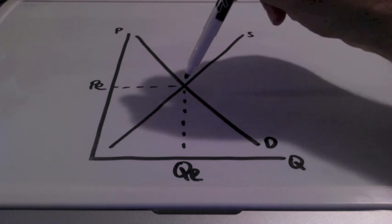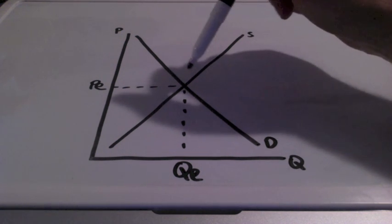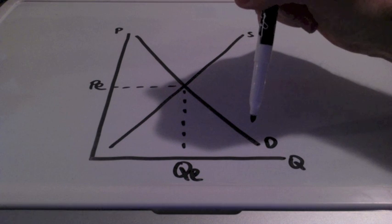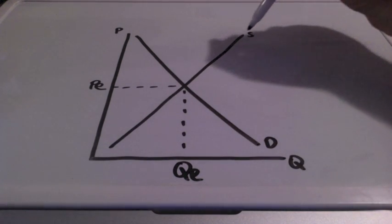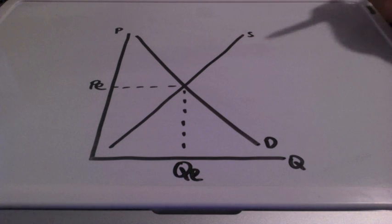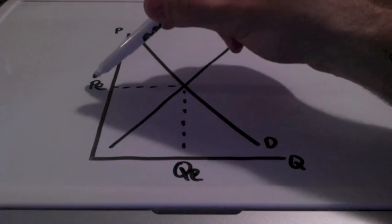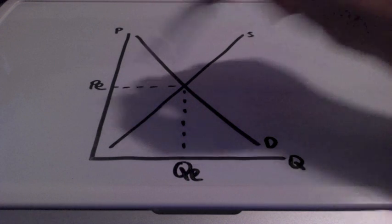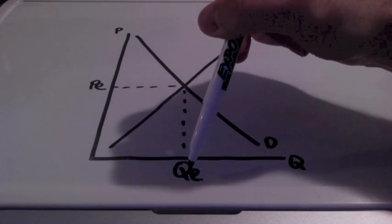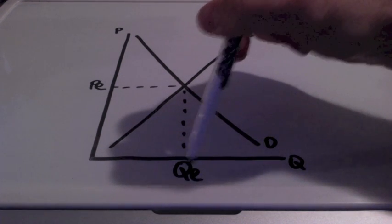Equilibrium represents the balance between what consumers are willing and able to buy and what producers are willing and able to sell. So we have price equilibrium, labeled PE, and quantity equilibrium, labeled QE.